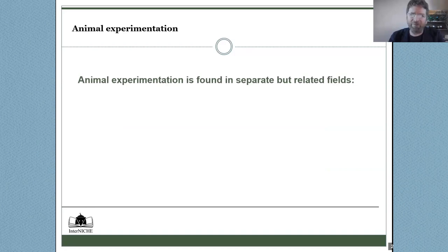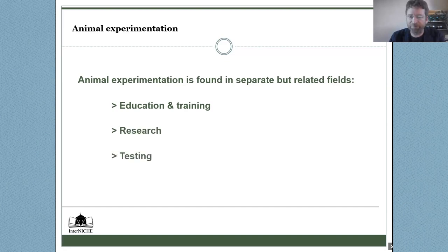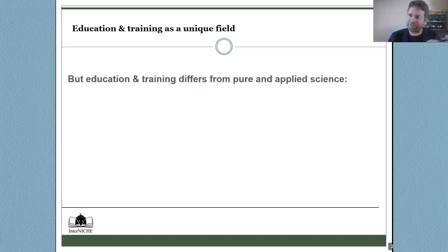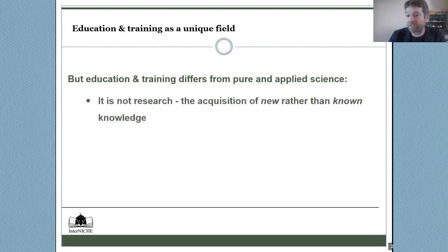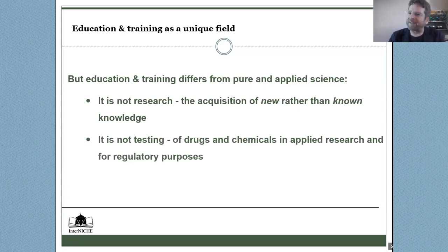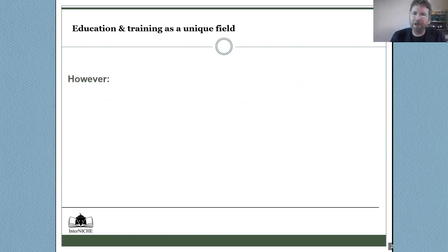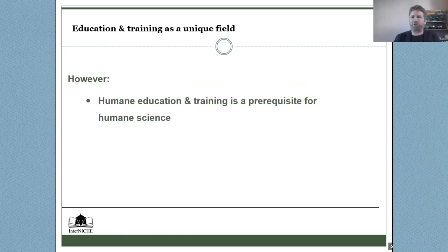We have animal experimentation and other harmful animal use in a number of different fields: first, education and training, which is what we'll be talking about today; and also research and testing. There are quite a few differences between education and training on one hand and pure and applied science on the other. It's not research — not the acquisition of new knowledge — rather it is acquiring known knowledge. It's not testing of drugs and chemicals for regulatory purposes; it's about skills and knowledge acquisition.